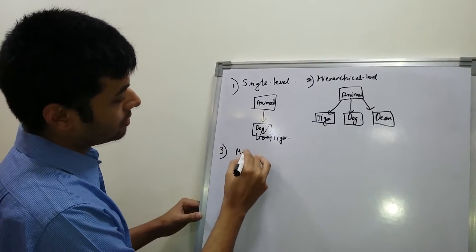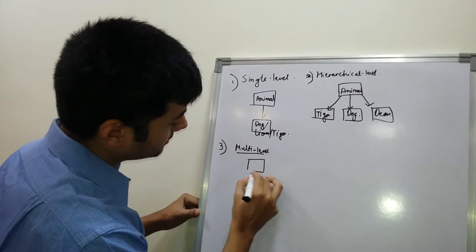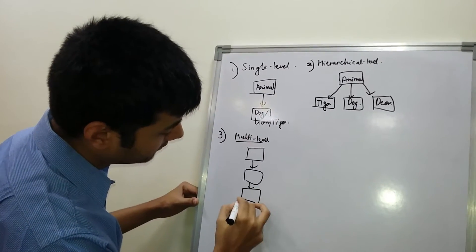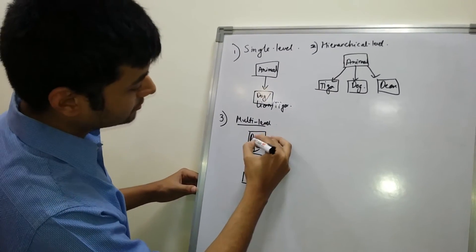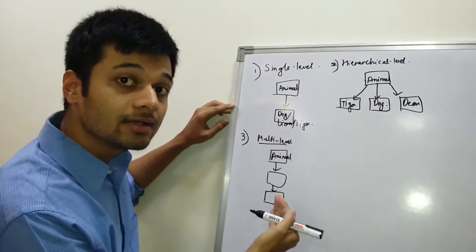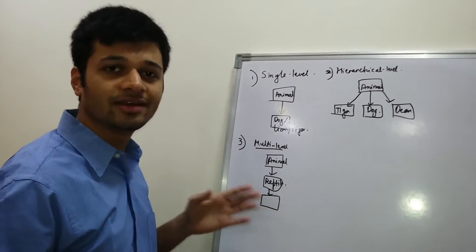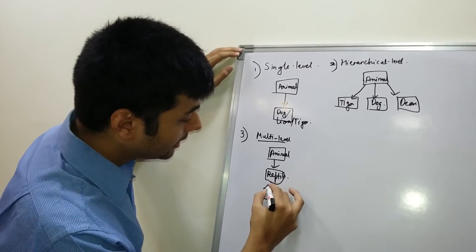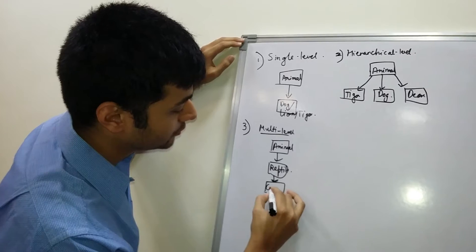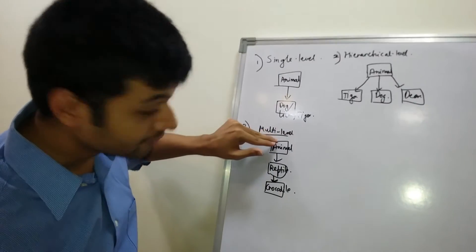The third one is multi-level. In multi-level, there's one base class, another derived class, and a third derived class from this class. The first base class would be Animal. The second category that I'll be classifying is Reptile. There are various categories like reptile, aquatic, terrestrial, and so on. I'm taking Reptiles. In reptiles, there are subcategories like Crocodile, Lizards, and so on. So one base class, this is the derived class of this base class, and this is a derived class of this base class.